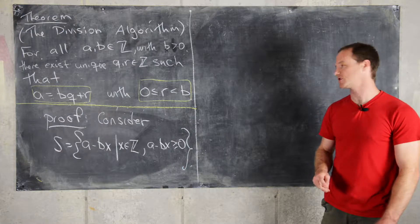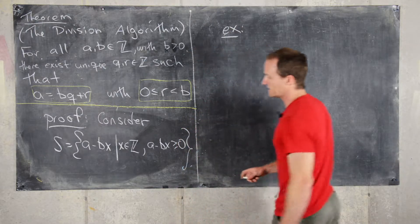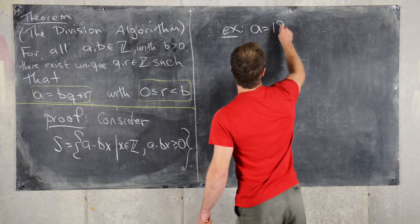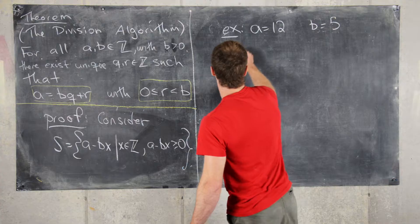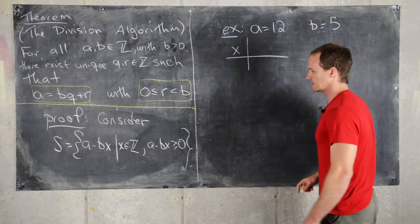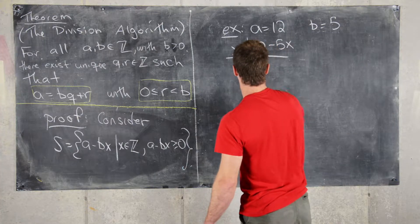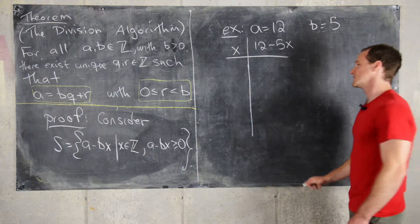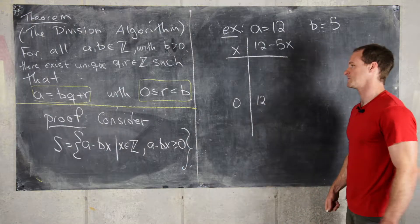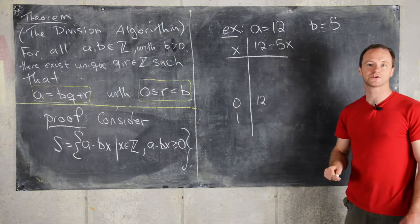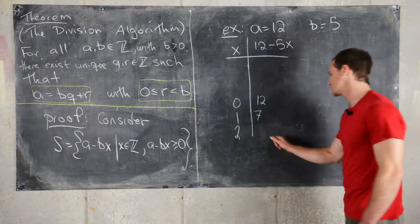Before we move on with the proof, let's look at one of these sets with A equals 12 and B equals 5. For different values of X, we look at elements of the form 12 minus 5X. If X equals 0, we get 12. If X equals 1, we get 7. If X equals 2, we get 2. If X equals 3, we get negative 3.